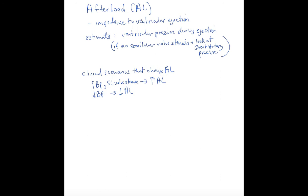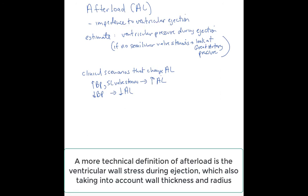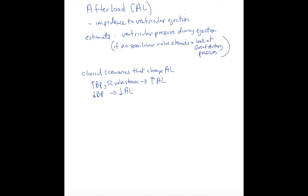Now let's talk about afterload, which in simplistic terms is the impedance to ventricular ejection. This is the load in the ventricle after it started its contraction. The way we can estimate this would be the ventricular pressure during ejection. How much pressure is developed in the ventricle is related to how much impedance to ejection there is. If there's more resistance to ejection, the ventricle pressure goes up. If there's less, the ventricular pressure goes down.